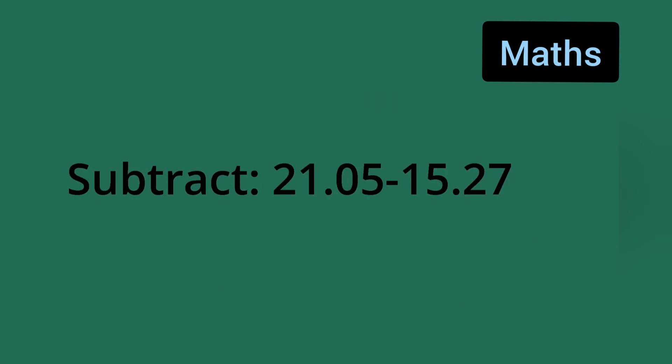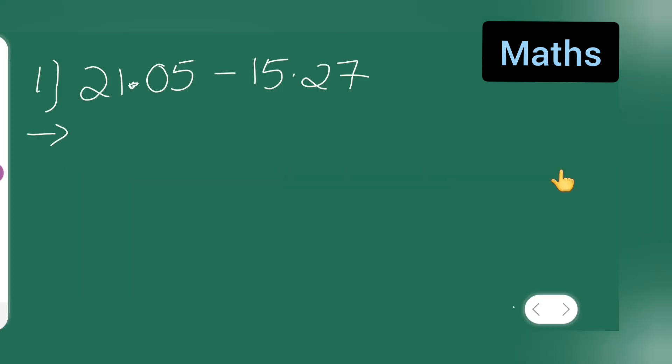In today's class of mathematics, let us subtract 21.05 minus 15.27. So what I'll have to do is this will be my rough column, let me subtract it over here.